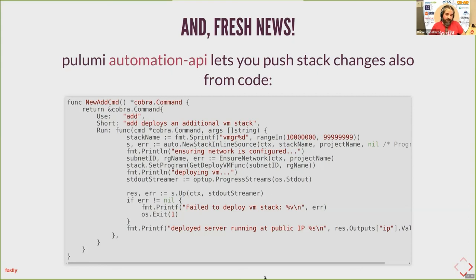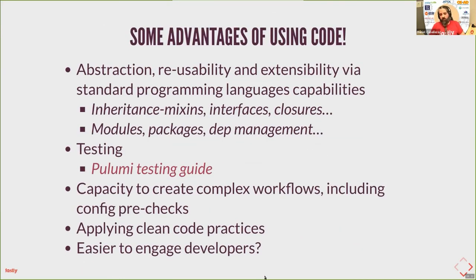Yesterday Pulumi released a blog post announcing the Automation API. You no longer need to wrap your terraform apply or pulumi up commands with scripts or Makefiles — you can invoke a Pulumi stack directly from code. In this Golang snippet, we're using the Cobra package to define a CLI tool where the add command can create a virtual machine. This helps you create more complex workflows, you can do pre-checks, and everything becomes more programmatic and powerful.